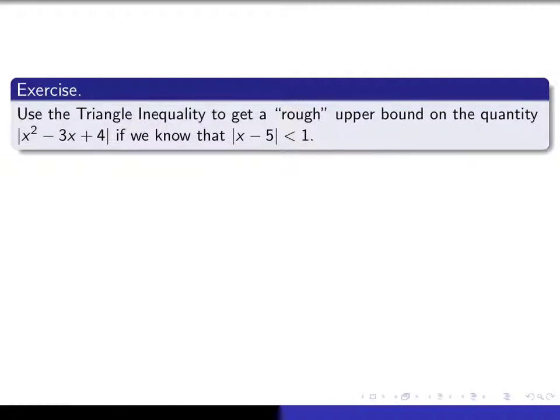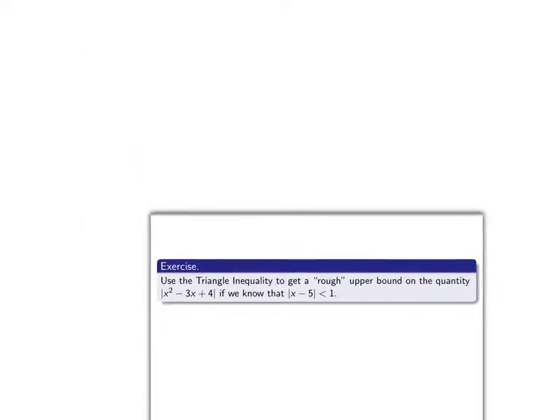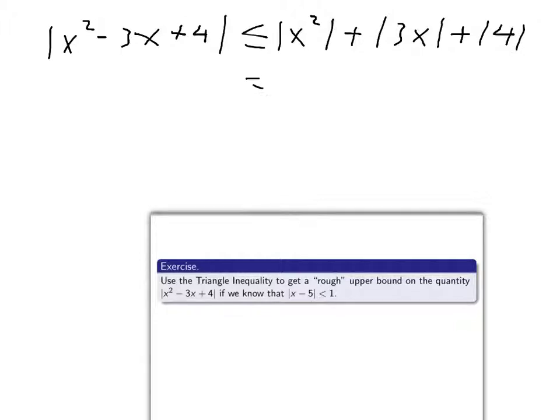Now, the idea of the calculation is to begin by applying the ordinary triangle inequality to this. So, absolute value of x squared minus 3x plus 4. If you just did triangle inequality on that, you don't worry about any of the minus signs. You just take absolute value of everything. That's what the triangle inequality tells you. And that's the same as absolute value of x squared plus 3 times absolute value of x plus 4.